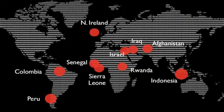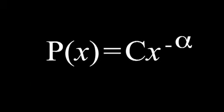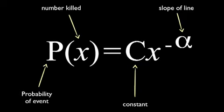And so we went a little wider, and we looked around the world at all the data we could get our hands on. From Peru to Indonesia, we studied the same pattern again, and we found that not only were the distributions these straight lines, but the slope of those lines — they clustered around this value of alpha equals 2.5. And we could generate an equation that could predict the likelihood of an attack. The probability of an attack killing X number of people in a country like Iraq is equal to a constant times the size of that attack raised to the power of negative alpha. And negative alpha is the slope of that line.